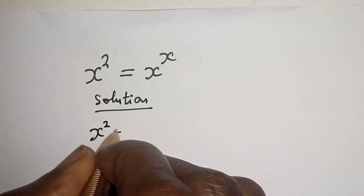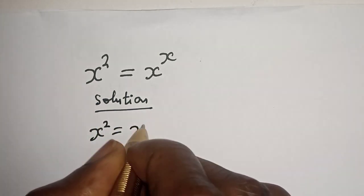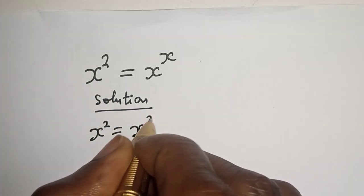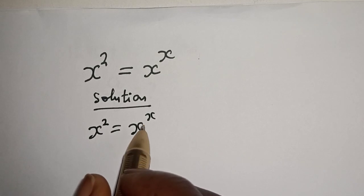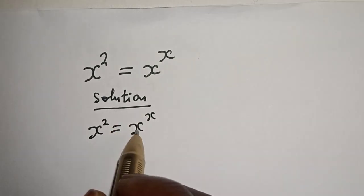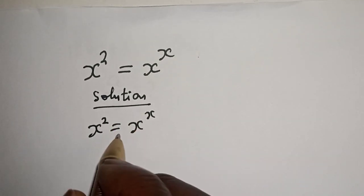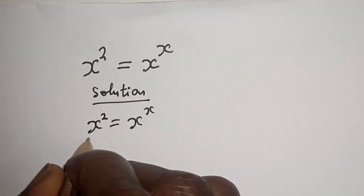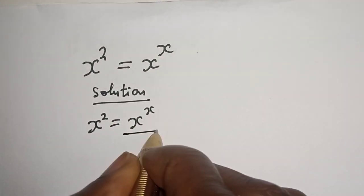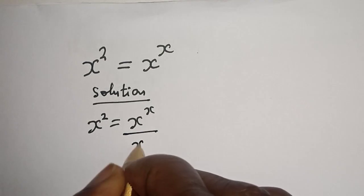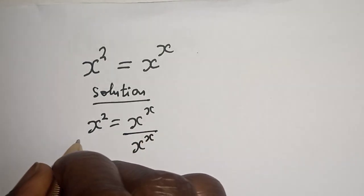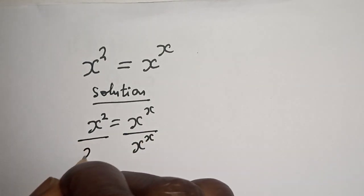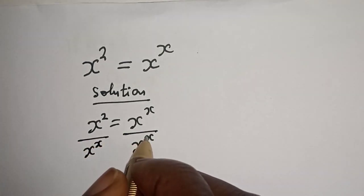s squared is equal to s raised to power s. Now let's divide both sides of this equation by s raised to power s — this side divided by s to the power of s, and this side divided by s to the power of s.